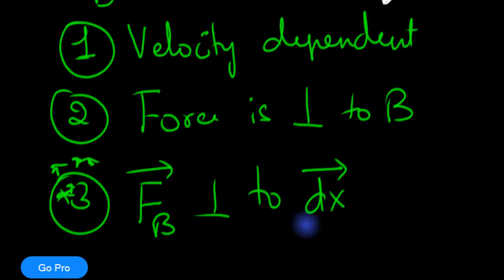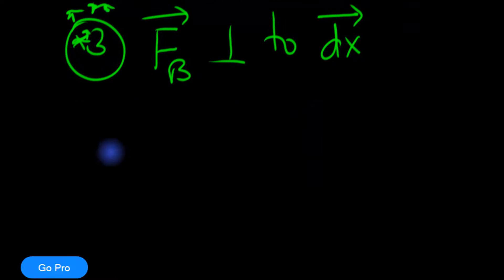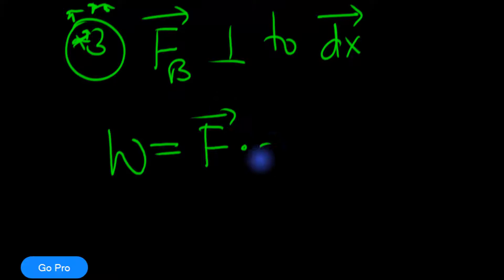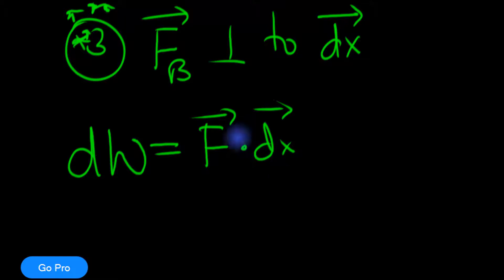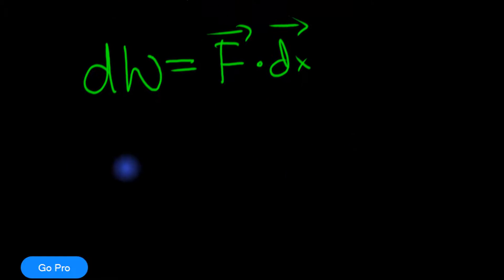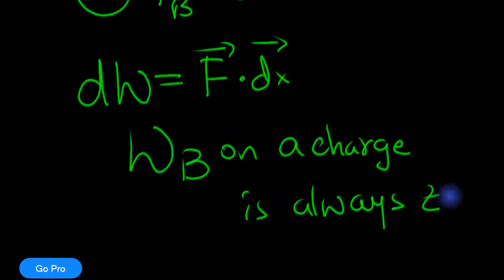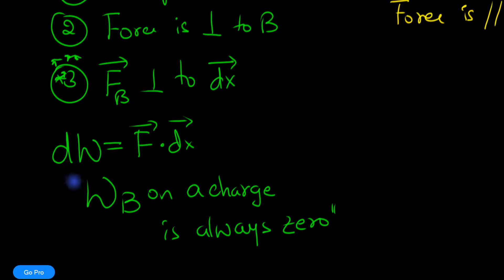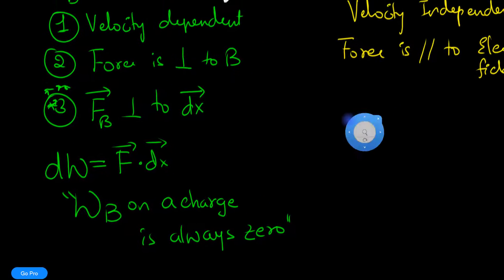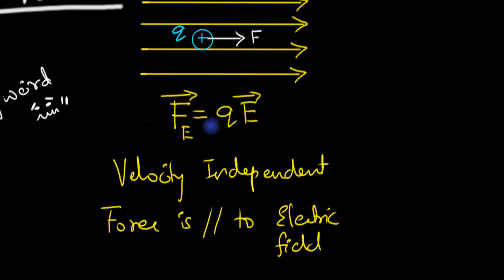If you remember work, power, and energy, work is defined as force dot displacement — the tiny work done by a force over a tiny distance. But if the force is perpendicular to the displacement, that means the work done by the magnetic field on a charge is always zero. That is super important, and it's not what we see with electric fields.